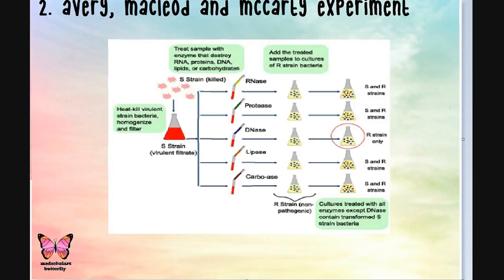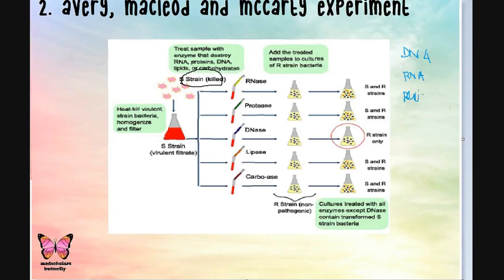After Griffith passed on this theory that DNA is the genetic material, Avery, MacLeod, and McCarty came to prove a concrete solution as to whether it was right or not. What they did was take the S-type strain and purify from it RNA, DNA, proteins, and all other related materials. They then separately treated these materials with enzymes.